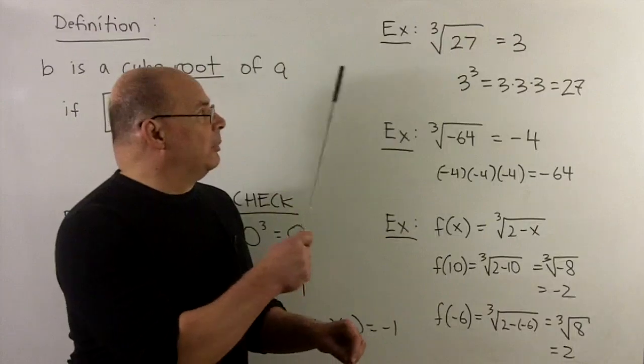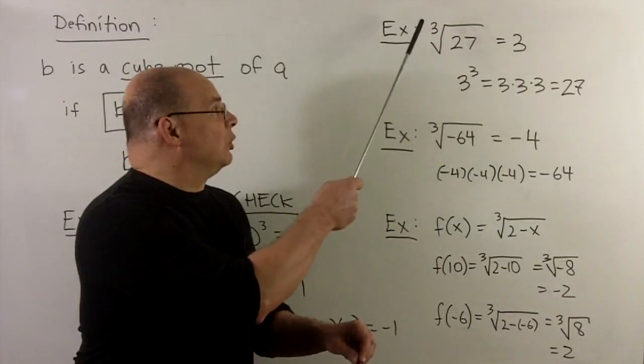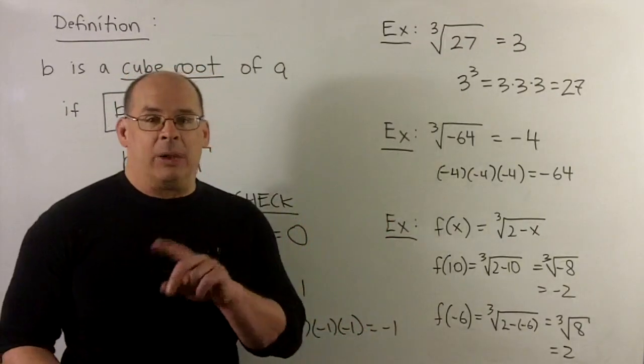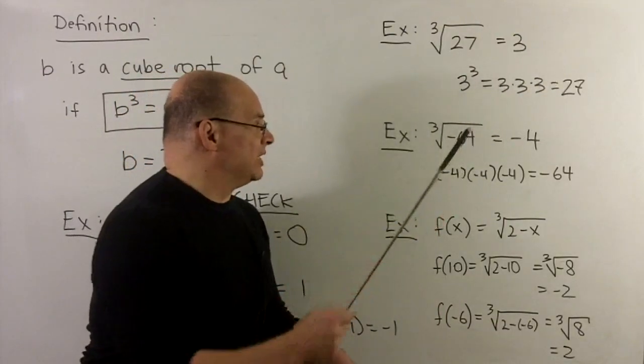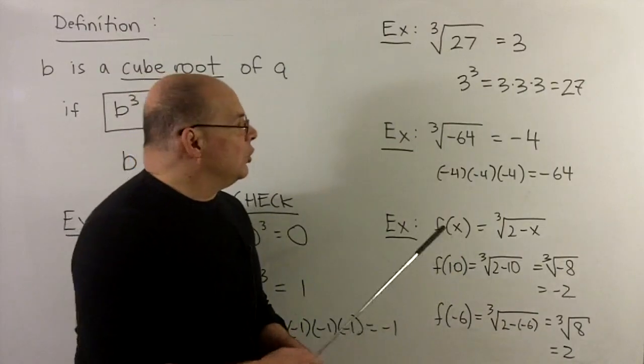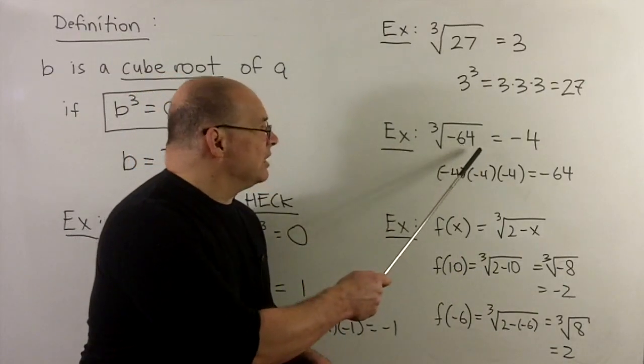For numbers with a little bit more going on, if I take, say, the cube root of 27, that'll be equal to 3. 3 cubed, 3, 3 times gets me to 27.